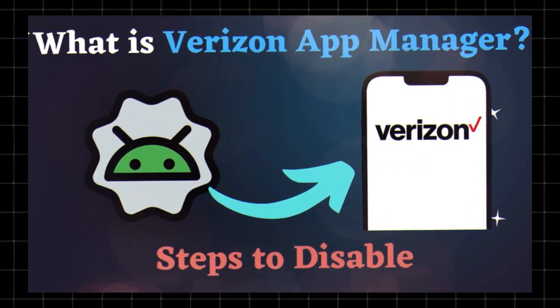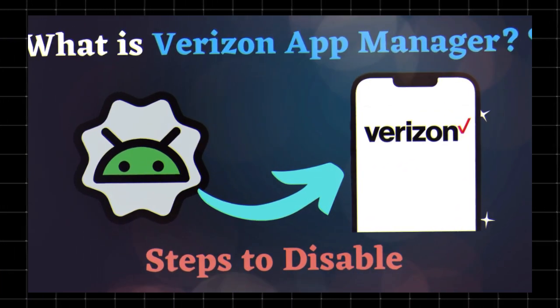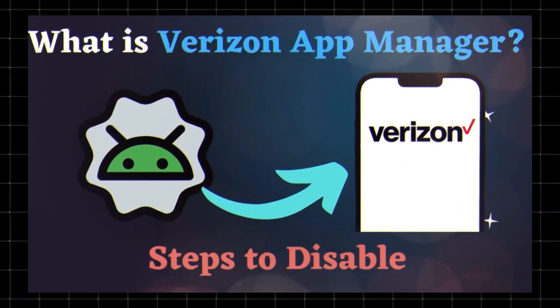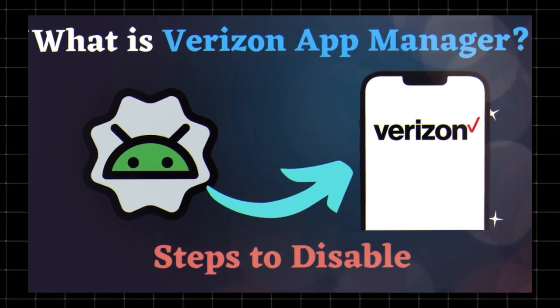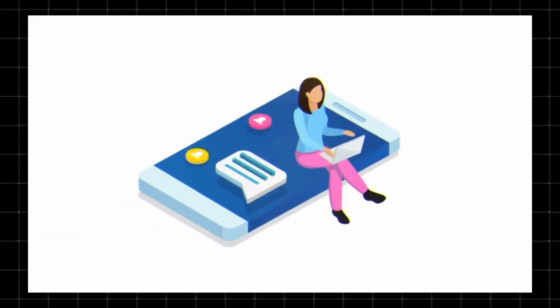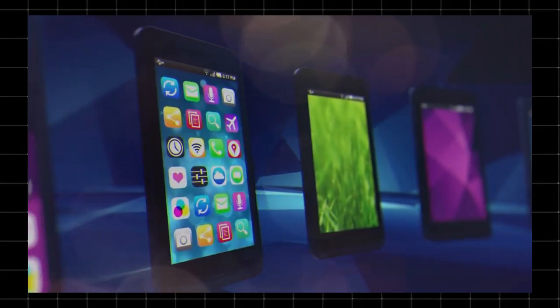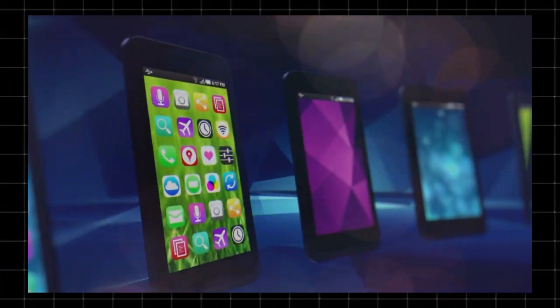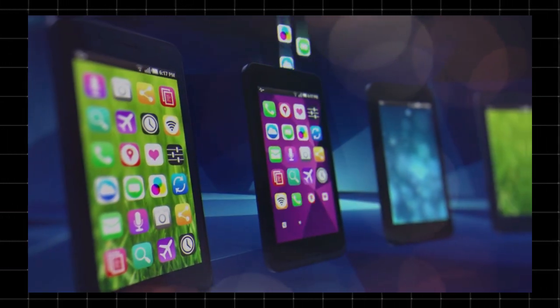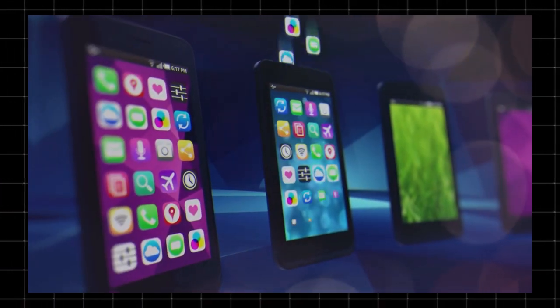Verizon App Manager is a system app found on some Verizon Android devices. It helps manage and recommend apps, sometimes automatically downloading sponsored apps onto your phone. Verizon claims it improves the app experience, but many users consider it unnecessary bloatware.